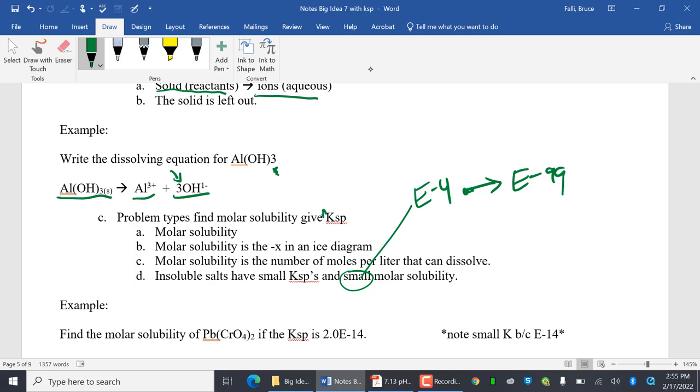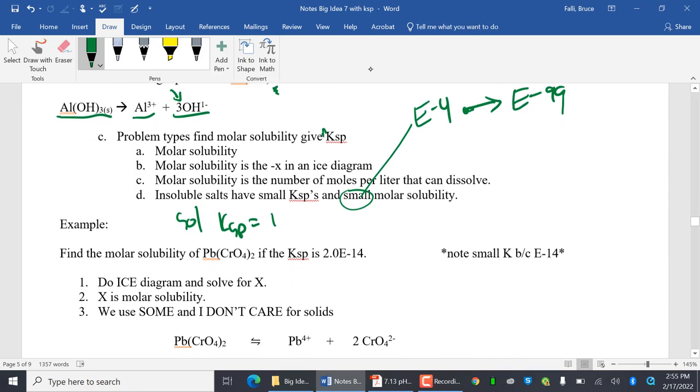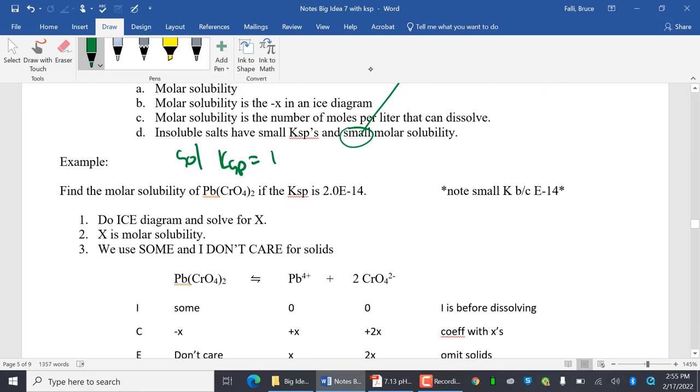Soluble salts have big KSPs. If you're soluble, KSP is something like 1 to E. Well, just 1. 1 is a big number, right? KSP equals 1. So we're going to find the molar solubility of lead chromate if the KSP is this. So notice this is a slightly soluble salt. So E is negative 14. It's small, right?